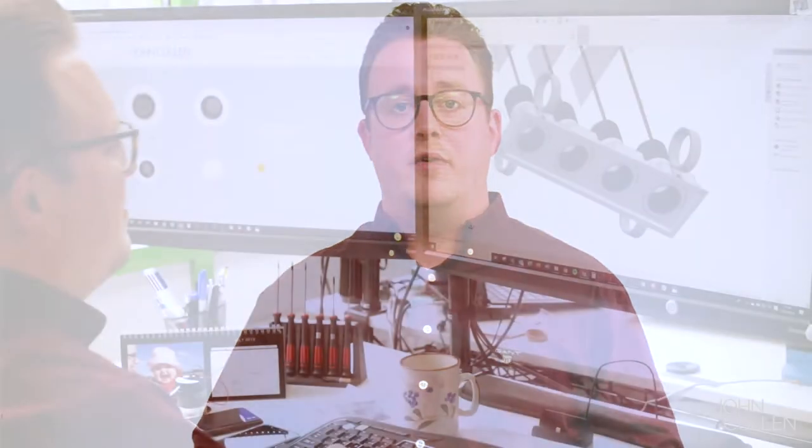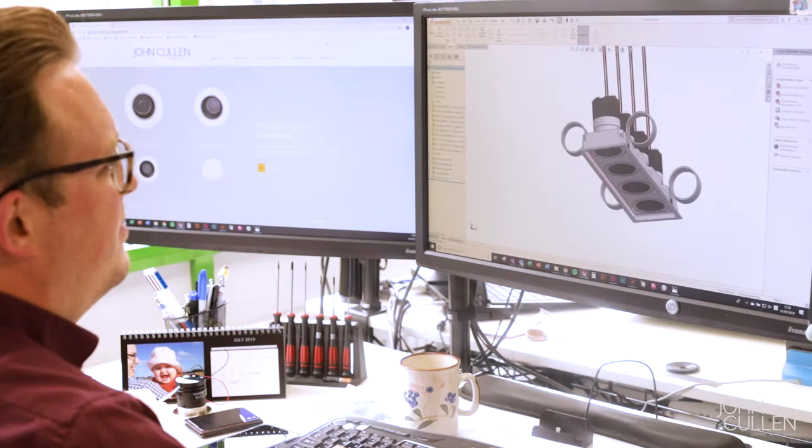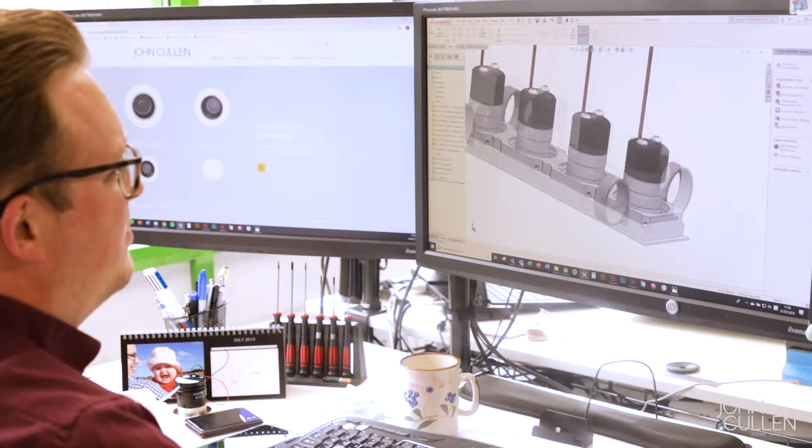When designing the Downlight 30, we were very much aware of the heritage of John Cullen in delivering small, discreet downlights to the UK interior design market. It's really important to us that we develop light fittings that sit within the brand DNA of John Cullen.